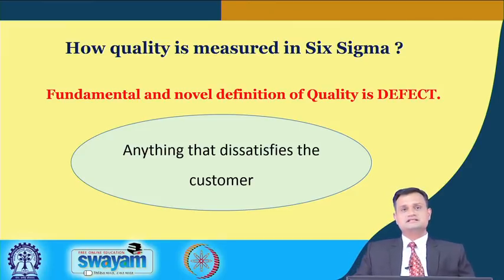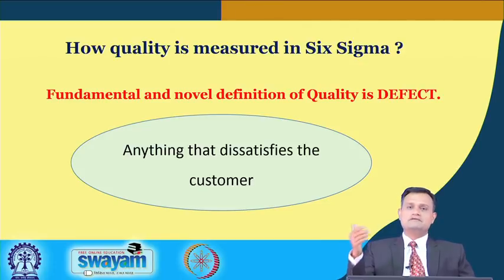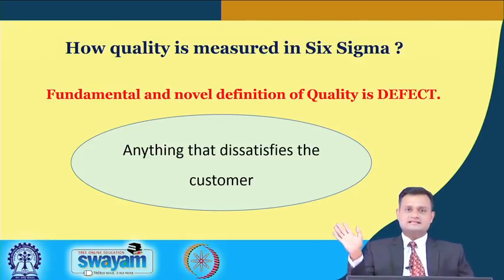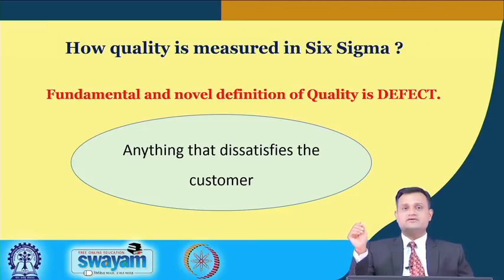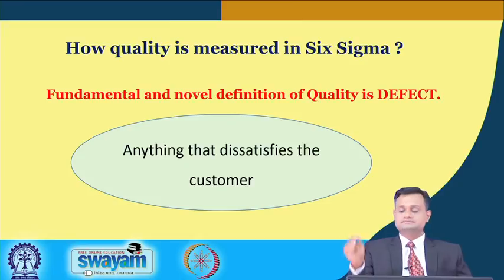How is quality measured in Six Sigma? The fundamental definition is: quality is defect-free. If you can get rid of defects and minimize them, you are improving on quality. Anything which dissatisfies the customer — anything not acceptable as part of customer requirements or product design — should be avoided. We should strive to see that the defect rate, in terms of wrong customer requirement assessment or producing products not meeting specifications, is eliminated.